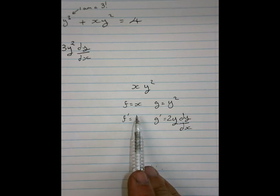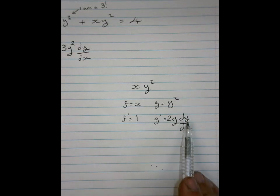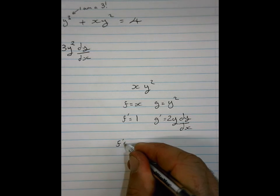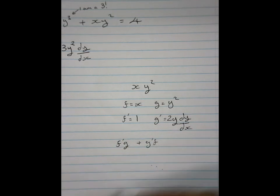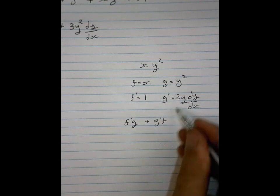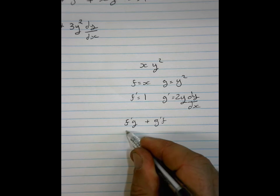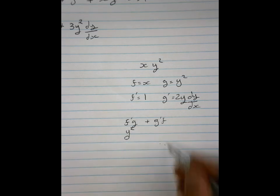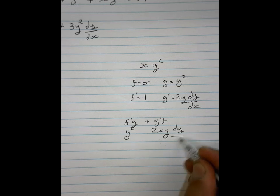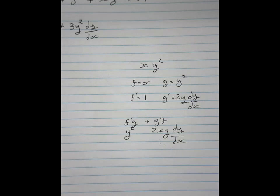Whenever you differentiate x, you just get on with it. Whenever you differentiate y, you must put dy by dx to compensate for that. That's where it comes from. Is that making sense? So now, f dashed g plus g dashed f, which is your product rule. It's going to be, so f dashed is 1, g is y squared, isn't it? So that's just going to leave me with a y squared. And g dashed f is going to give me 2xy dy by dx. And there's a nice big plus in the middle.